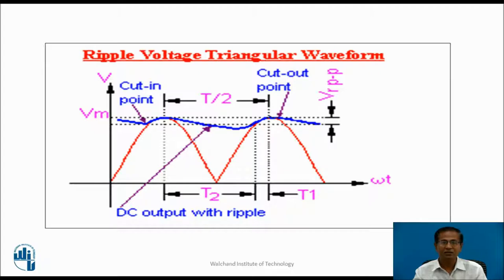Let us see how it works. When we apply AC to this circuit, during the positive half cycle, current flows through the upper half winding, secondary, diode D1, and capacitor. Diode D1 is forward biased, so capacitor C starts charging and charges up to its peak input value. Immediately, capacitor C gets charged up to its peak input value.